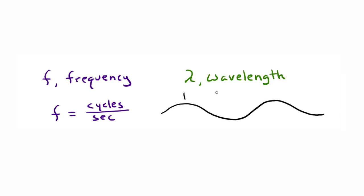Let's use the letter F to represent frequency, which is the number of cycles per second. The Greek symbol lambda is commonly used to denote the wavelength, which is the distance between any two successive identical points on the wave.